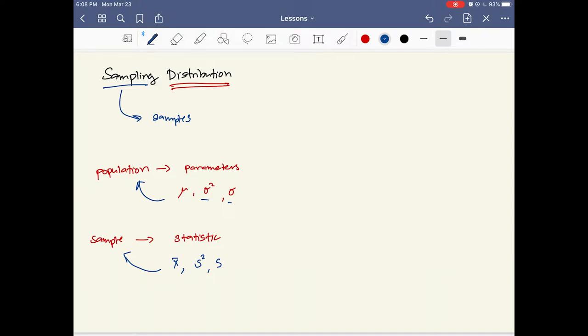But when we are talking about sampling distribution as a whole, we are actually talking about all possible samples that we're going to get from the population. What does it mean when we say all possible samples? Let me give you an example. When we talk about sampling distribution, for example, we have a population of numbers. Let's say...